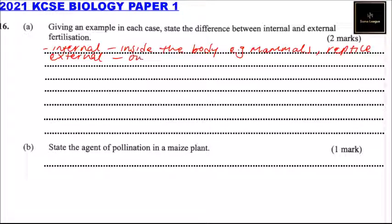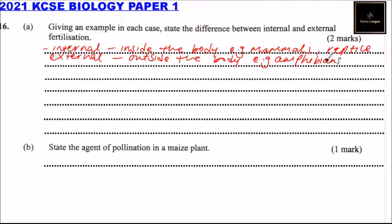External fertilization happens outside the body, for example in amphibians and fish.